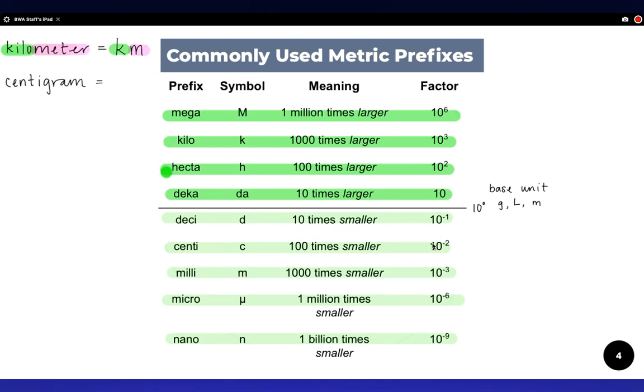You would see a symbol written like this, just a c and a g. So the prefix is centi. That's telling you how many times smaller it is than the base unit, and the base unit is gram. So that tells you we're measuring mass.